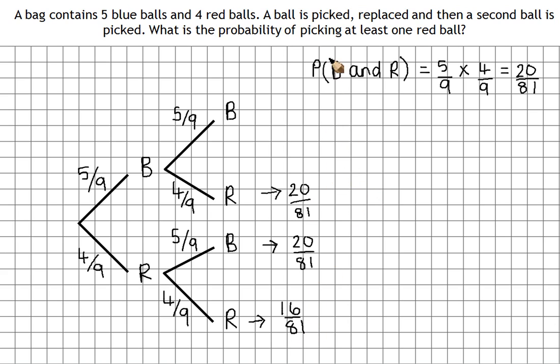Now we've got three ways here. We've got this one or this one or this one. Now we've got to remember that in probability 'or' we need to add our probabilities. So that means to get our final answer,